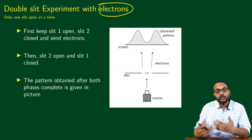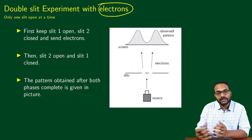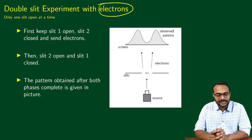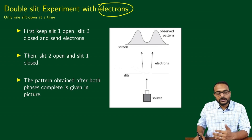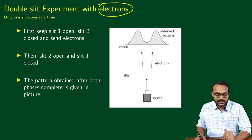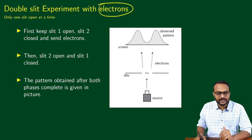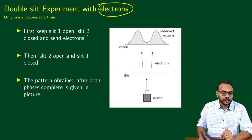Quantum mechanics is a mathematical framework that was developed in order to explain experimental data, such as experiments like the double slit experiment. Historically, the double slit experiment was not actually done until much later — it was not done before the advent of quantum mechanics. There were many other experiments, but we use this as a representative experiment.